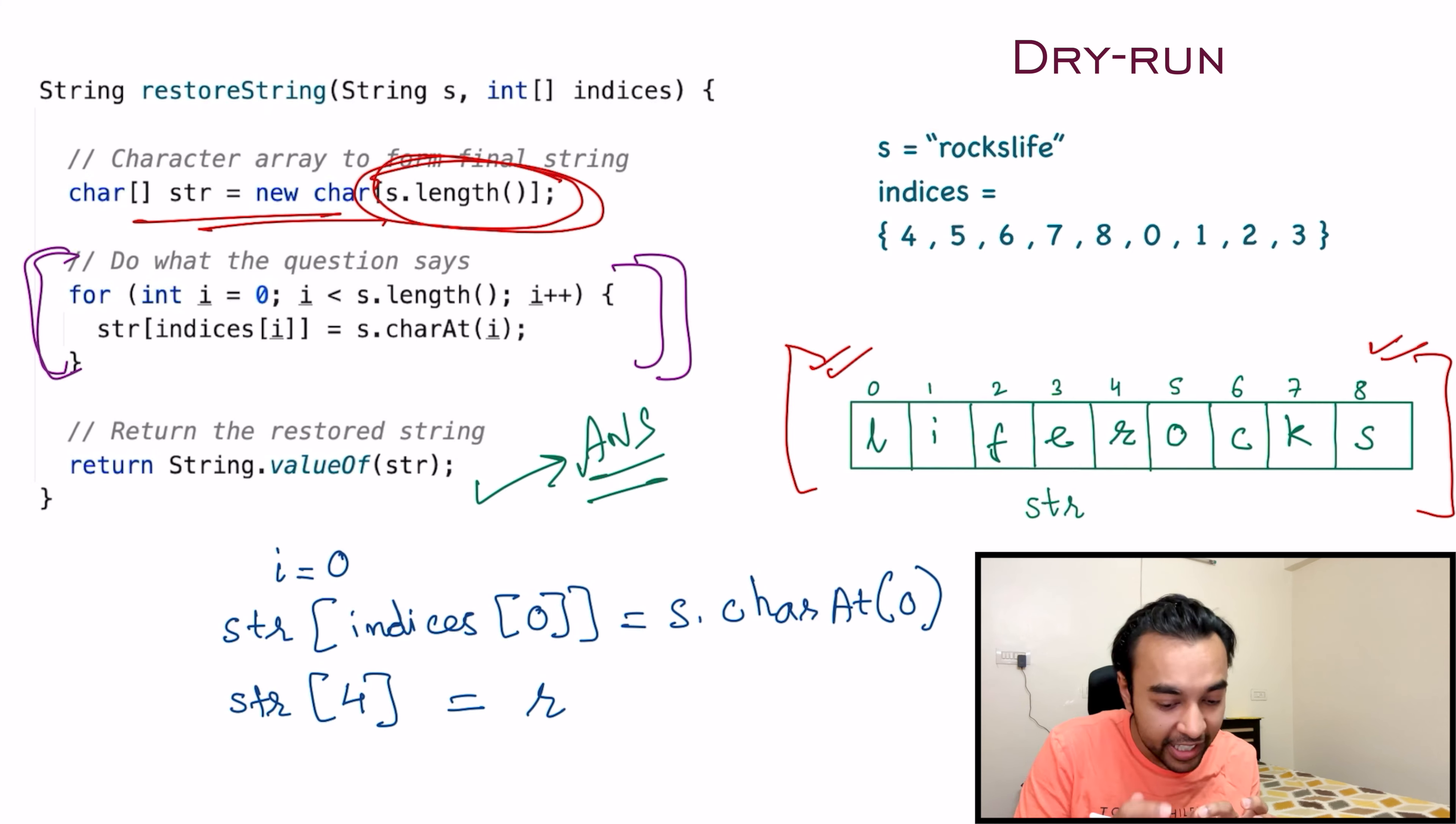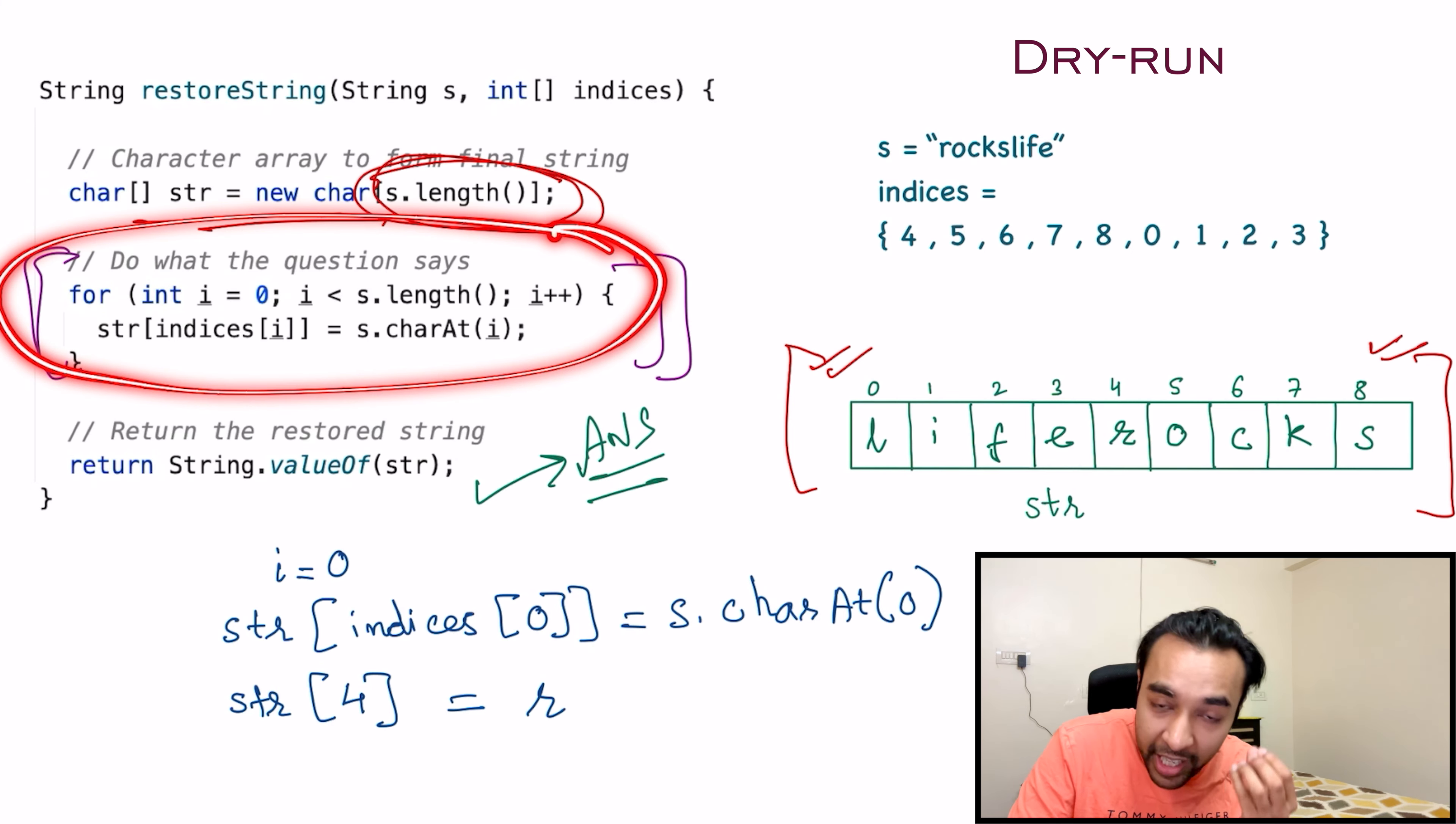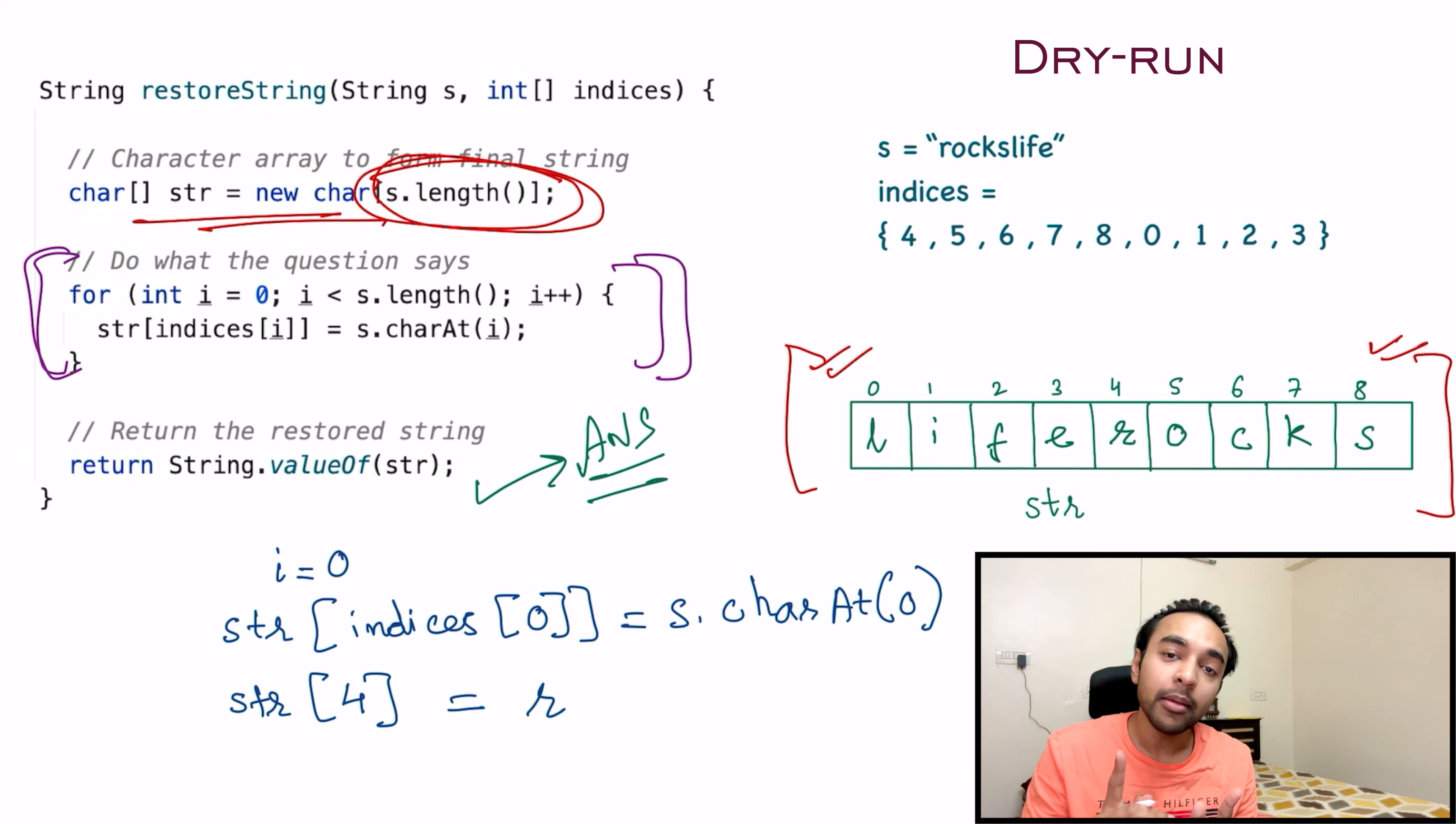So technically, this was just a one line solution. The time complexity of this solution is order of n because you need to iterate through the entire string only once. And the space complexity of this solution is also order of n because you need some extra space to determine the position of each character.